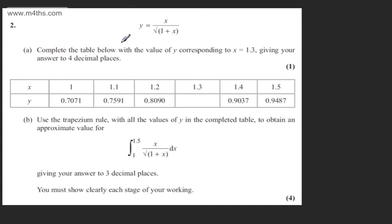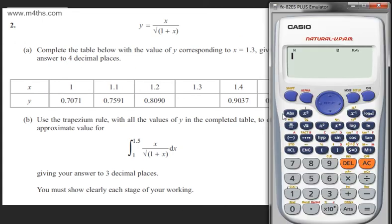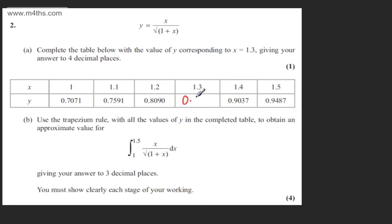In part A, we're asked to complete the table below with the value of y corresponding to x equals 1.3, giving our answer to four decimal places. All we need to do is sub this into a calculator. So we'll have 1.3 over the square root of 1 plus 1.3, which is going to be 2.3. That gives me 0.857194 and so on. We need this to four decimal places, so it'll be 0.8572.